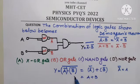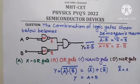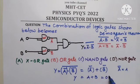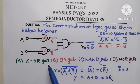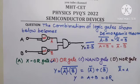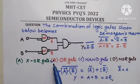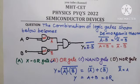So the output Y of this given logic circuit is A plus B, which represents the OR gate. The correct option is that the given logic circuit represents the OR gate.